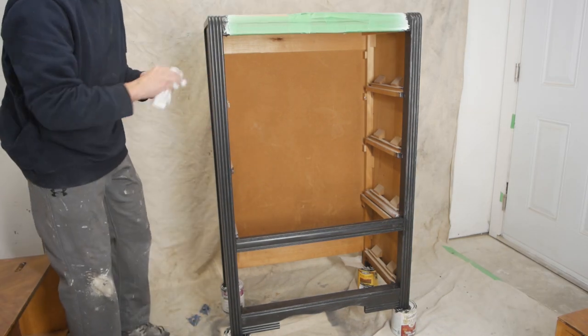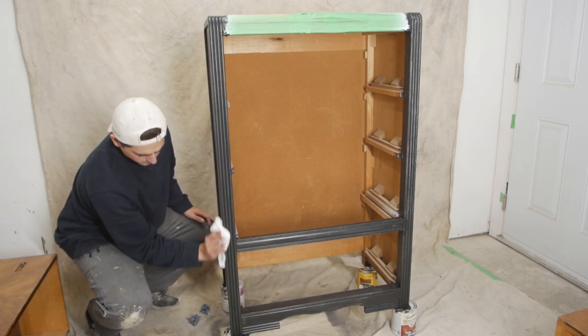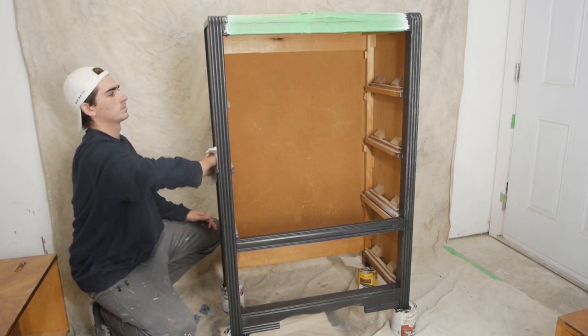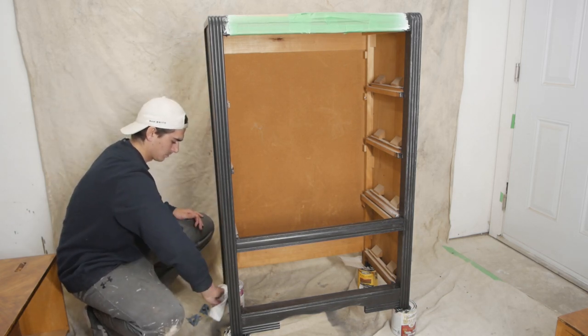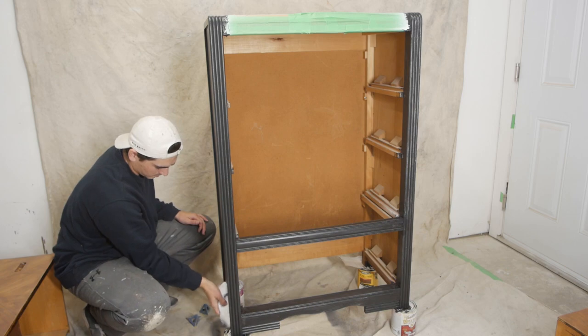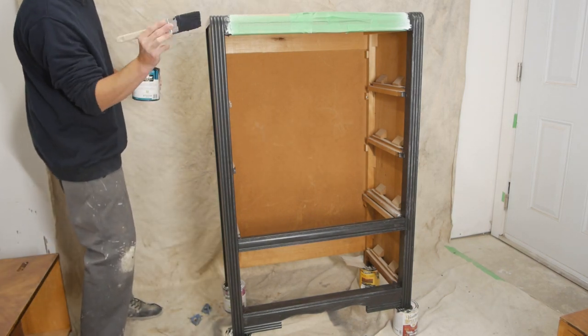After sanding any imperfections, just take a lint-free cloth and clean up all the dust so we don't have any issues on our next coat of paint. When everything's clean, throw on the next coat.